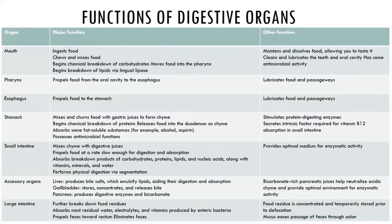The functions of the digestive system include ingestion, which occurs when foods and beverages enter the digestive tract via the mouth. We also have mechanical processing, which is the chewing, the mixing of food with our saliva, the churning of food in our stomachs, and what we call segmentation in our intestine.